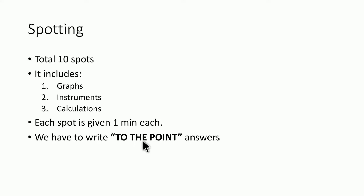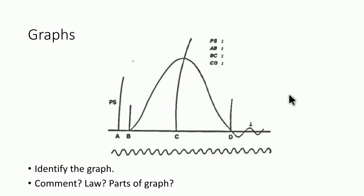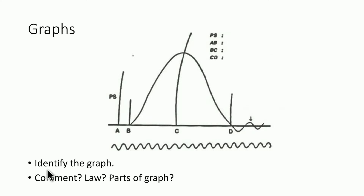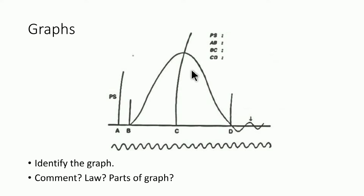In graphs, what is asked is to identify the graph, so half a mark is for identification and the other half may be for a comment, a label, or the parts of the graph — it depends on which type of graph is asked. But the half-mark identification question is fixed. Today we will discuss about graphs in physiology.